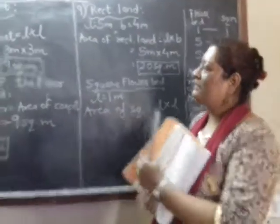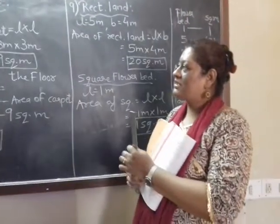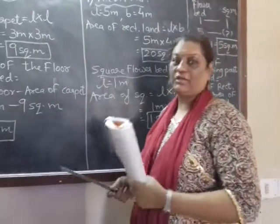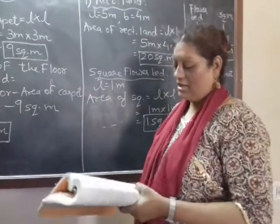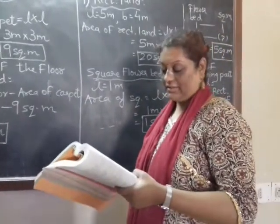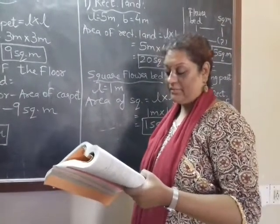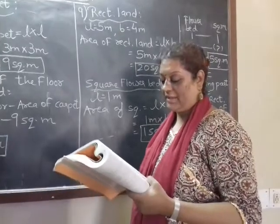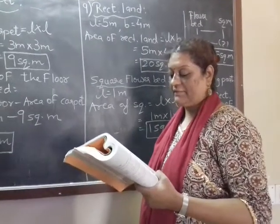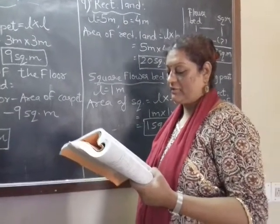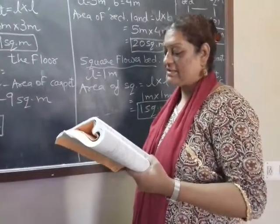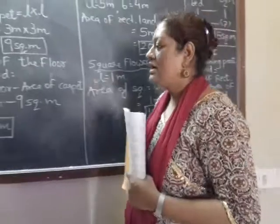Continuing further with question number 6 of exercise 10.3 of your textbook. A table top measures 2 meters by 1 meter 50 centimeters. What is its area in square meters?